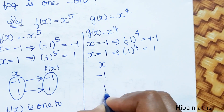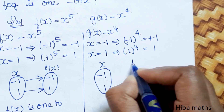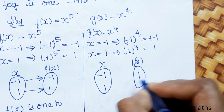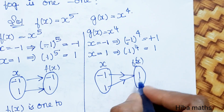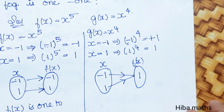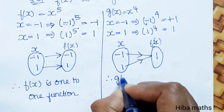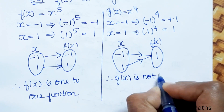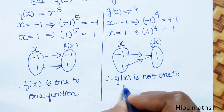For x = -1 and x = 1, g(x) gives the same value of 1. So two different elements map to the same image. Therefore g(x) is not one-to-one.